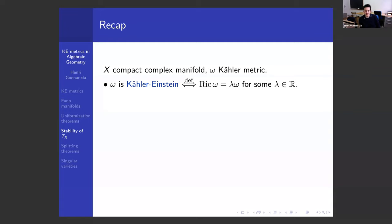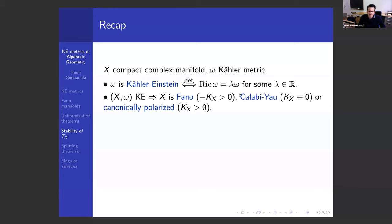I define omega to be Kähler-Einstein if the Ricci tensor is proportional to the metric. A straightforward consequence of X admitting a Kähler-Einstein metric is that the geometry of X is very much constrained. More specifically, the canonical bundle of X has to have a sign: either the Ricci curvature is positive, in which case KX is anti-ample and X is Fano; or the metric is Ricci flat, in which case X is of type CY; or the last possible case is negative curvature, in which case KX is ample and X is canonically polarized.